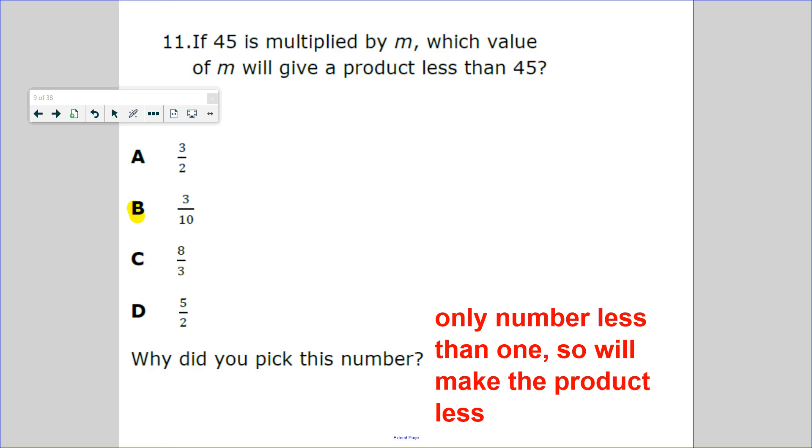Number 11: if 45 is multiplied by m, which value will give me a product that's less than 45? 3/2 is more than one whole. 3/10: cut into 10 parts, shade in 3. That's part of it. You're finding part of the answer. I think it's going to be B.